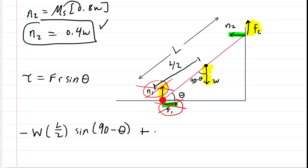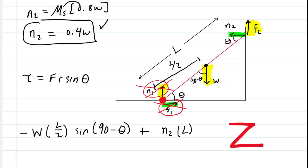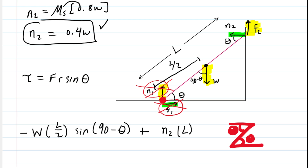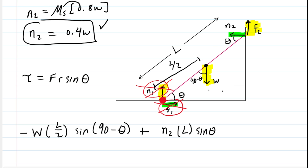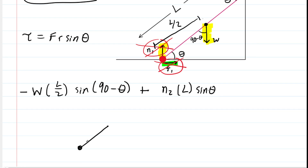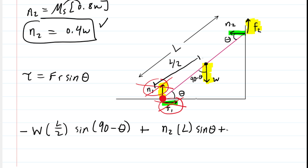For the N2 force, its torque is N2 times L times sin(θ), since the distance from N2 to the pivot is the full length L, and the angle between N2 and the ladder is θ — the same as the alternate interior angles in a Z-shape. This normal force causes counterclockwise rotation, so it contributes positive torque.